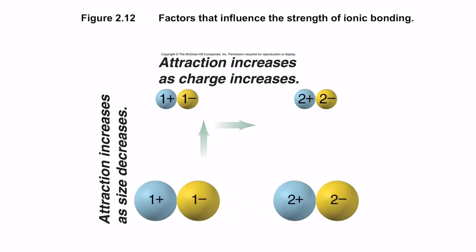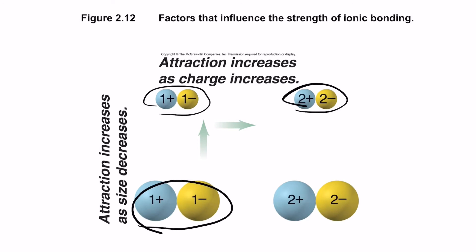Attraction increases as charge increases, but decreases as atomic size increases. So attraction increases when size decreases. A higher charge and a smaller atom both lead to higher attraction. This is consistent with Coulomb's law: higher charge and shorter distance both increase electrostatic energy.